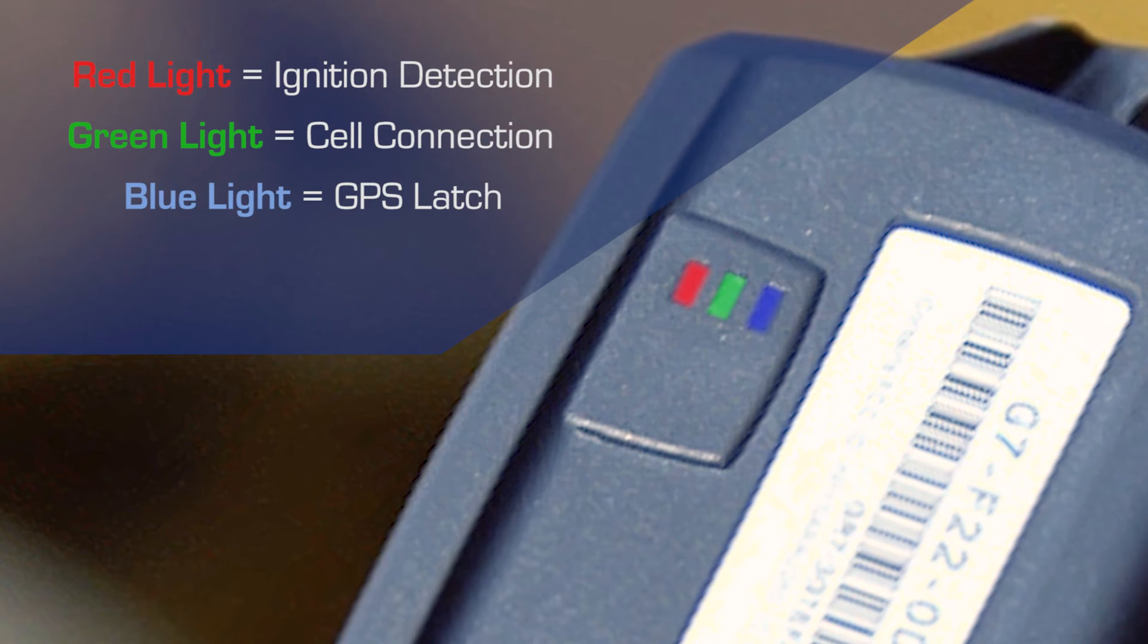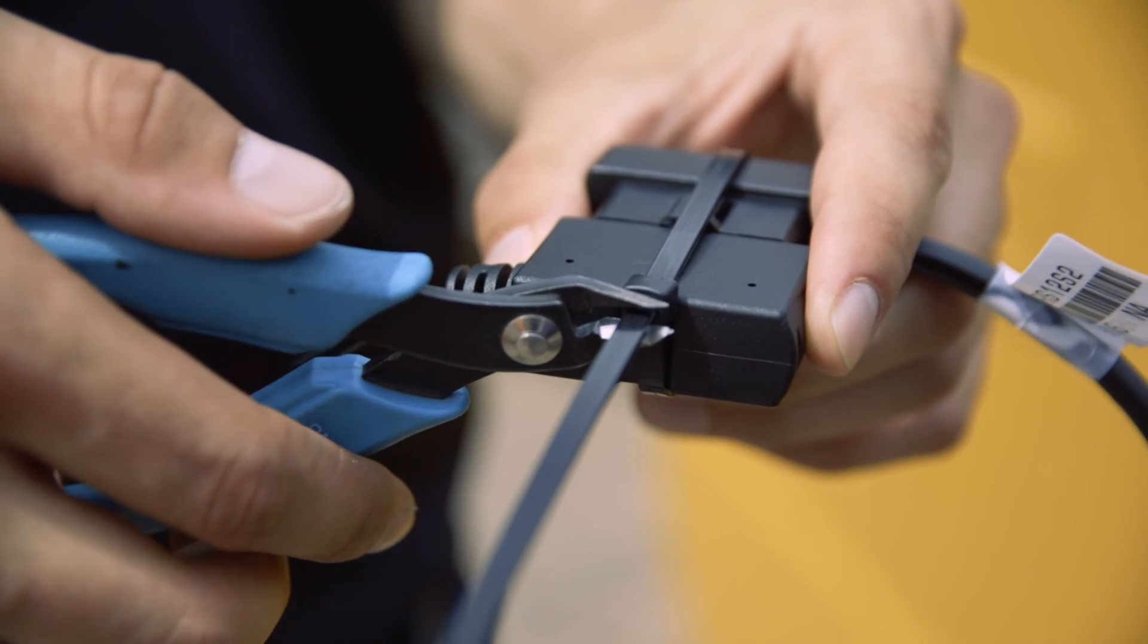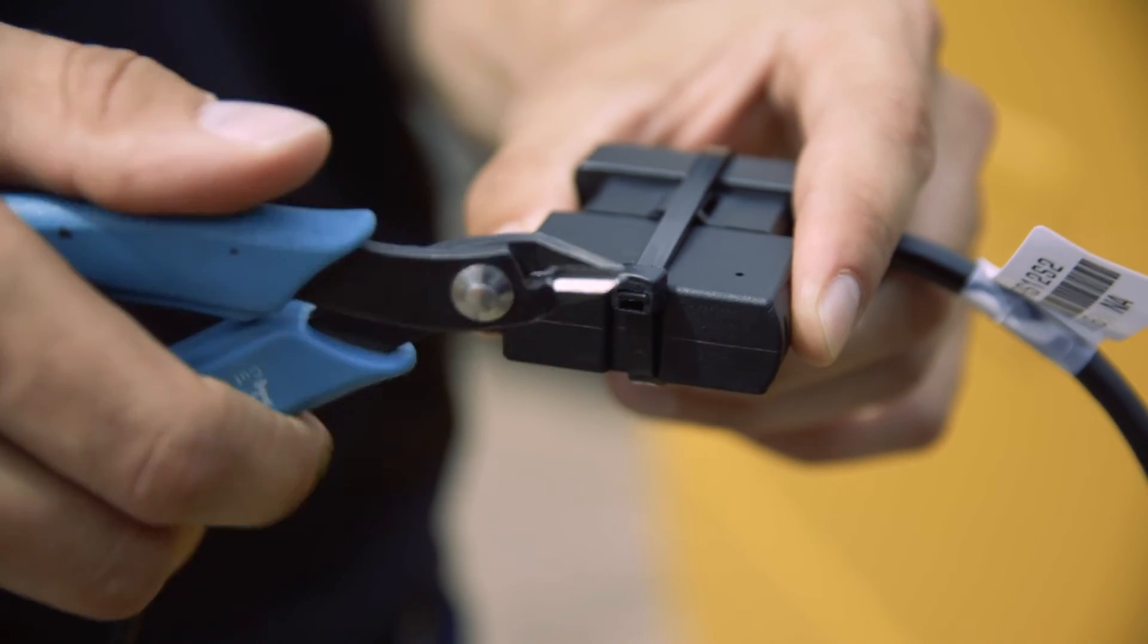Wait for all 3 LEDs to come on. Secure the device to the harness and all the other connection points along the daisy chain with zip ties.